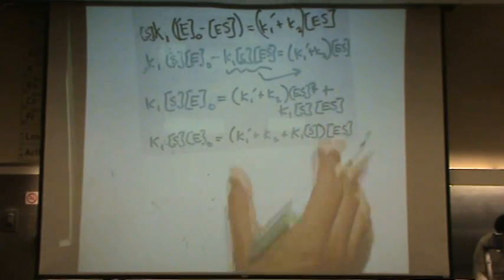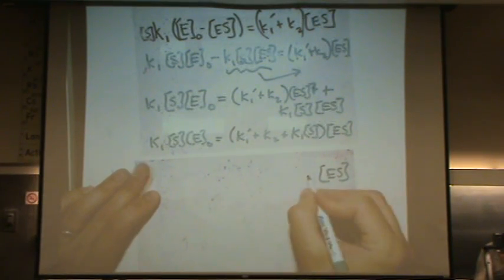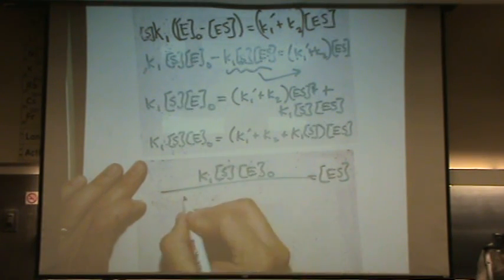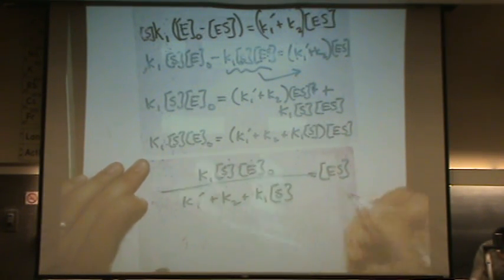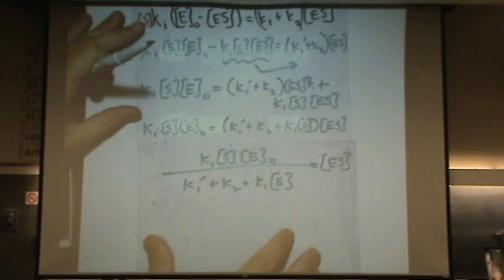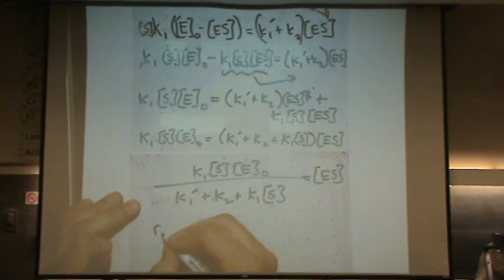Now, our expression for the intermediate is ES equals this whole monster, K1, S, E naught, K1 prime, plus K2, plus K1, S. Okay, I'll pause for a second. I just did a lot of algebra. All this in green was just algebra. Did I lose anybody, or if anybody caught the mistake, I could say it. Okay, let's go back to RP. My answer. And here we are, RP...